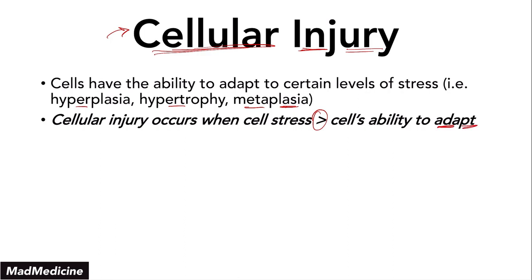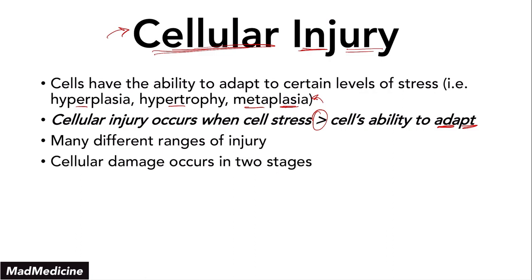So what happens when the amount of stress far exceeds our cells' ability to handle that stress? Well, in that situation you are going to have cellular injury occurring. Cellular injury is the perfect phenomenon for when the stress placed upon a cell far exceeds the cell's ability to adapt. Cell damage can occur in two main stages.